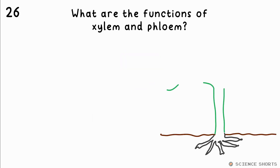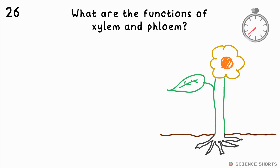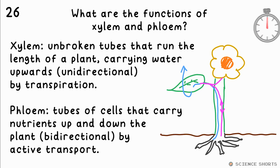Question 26. What are the functions of the xylem and phloem in a plant? The xylem are long unbroken tubes that carry water up the plant by transpiration, caused by water evaporating from the leaves. This is unidirectional — just in one direction. Phloem are tubes of cells through which sugars and other molecules are transported up and down the plant, so it's bidirectional. They pass from one cell to the next by active transport.